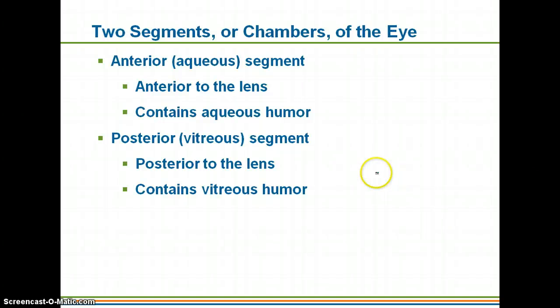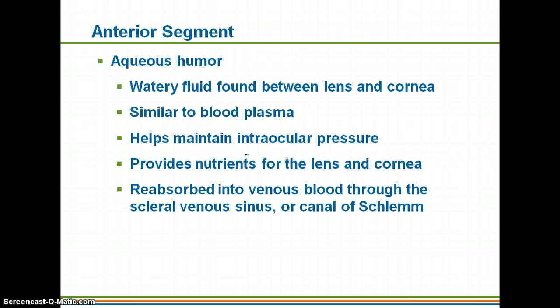The anterior segment contains aqueous humor, which is very watery and similar to blood plasma in composition. It helps provide nutrients for the lens and cornea and helps maintain intraocular pressure. It is reabsorbed into the blood through a canal, so you are constantly replacing your aqueous humor.